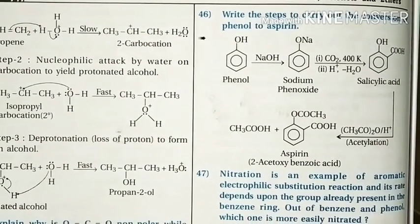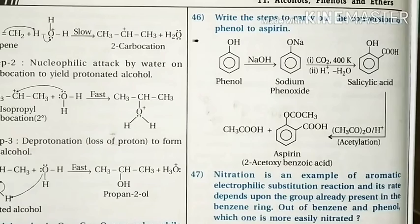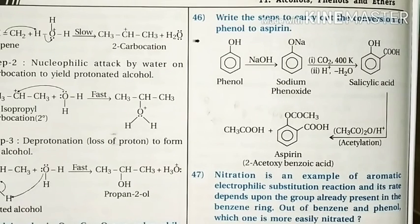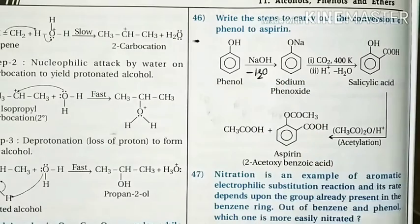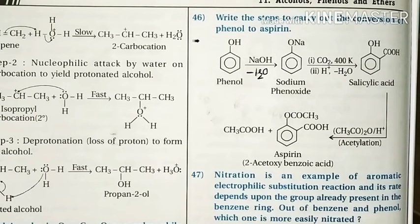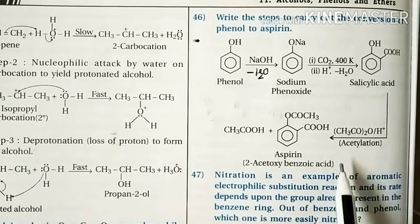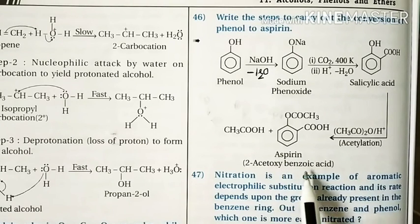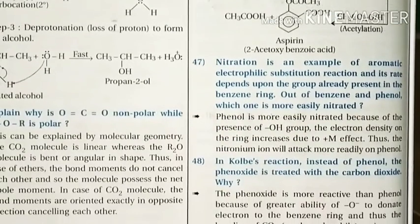Question 46: Write the steps to carry out the conversion of phenol to aspirin, an analgesic painkiller. First, phenol is reacted with sodium hydroxide to form sodium phenoxide. Sodium phenoxide is then reacted with carbon dioxide at 125°C and 4-7 atmospheric pressure, followed by acidification to give salicylic acid. Further, the hydroxyl group of salicylic acid is reacted with acetic anhydride in an acylation reaction to give 2-acetoxybenzoic acid, also known as aspirin or acetylsalicylic acid.